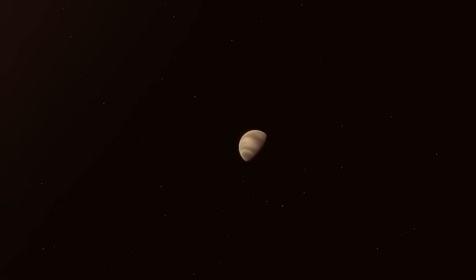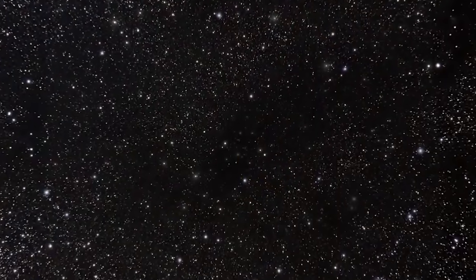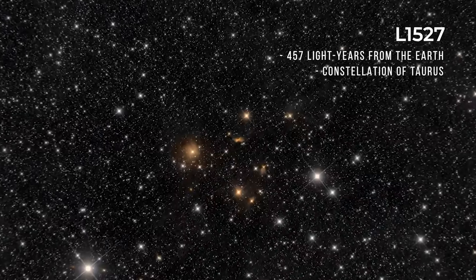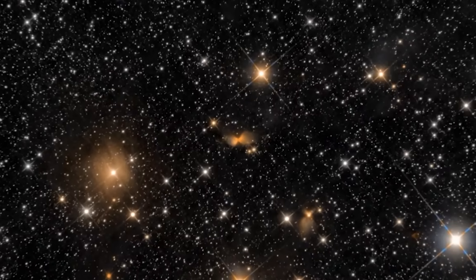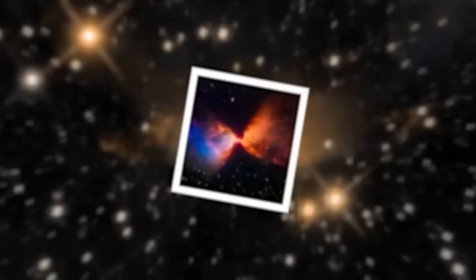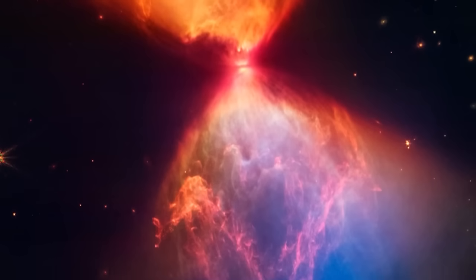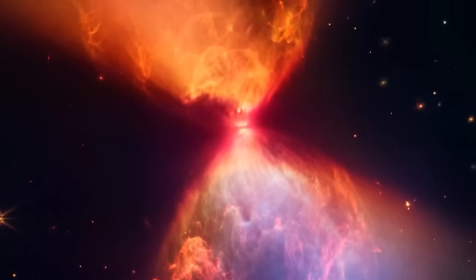This photo, from James Webb, released in November 2022, reveals the formation of a protostar, L1527, located in the constellation Taurus. The light emitted by this young star, about 100,000 years old, is shaped like an hourglass. Hence the nickname, cosmic hourglass, given to this phenomenon.